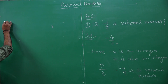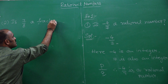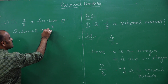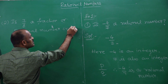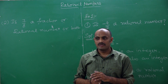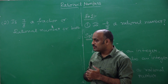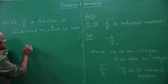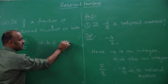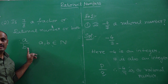Let us see one more question. Is 7 by 8 a fraction or a rational number? To solve this, let us go theoretically. What is the difference between a fraction and a rational number? Both look alike. A fraction can be expressed in the form of a by b, where a and b are natural numbers — that means both numerator and denominator are positive.